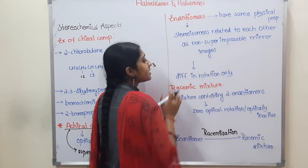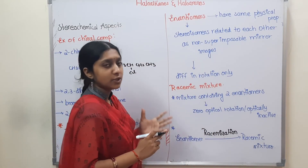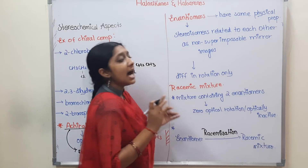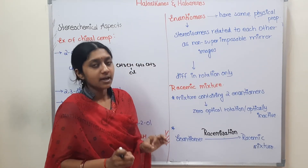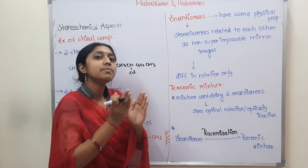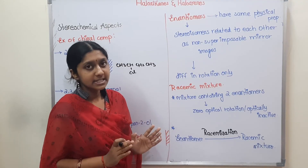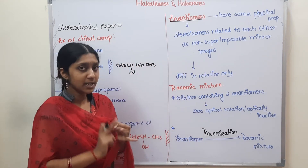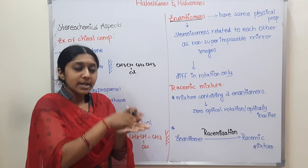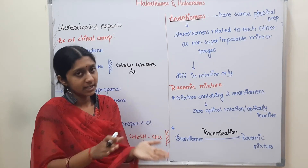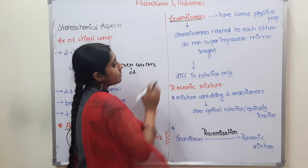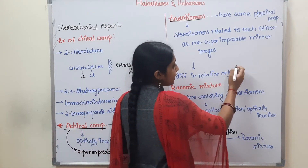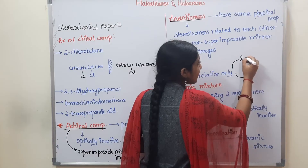Stereoisomers — dextro and levo forms — that are related to each other as non-superimposable mirror images are called enantiomers. The dextro and levo structures are non-superimposable mirror images. So enantiomers differ in rotation only — L form is anticlockwise, D form is clockwise rotation.